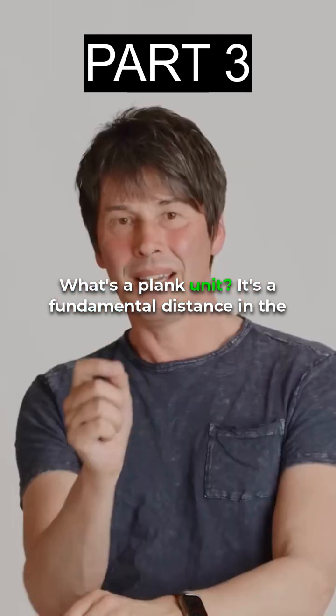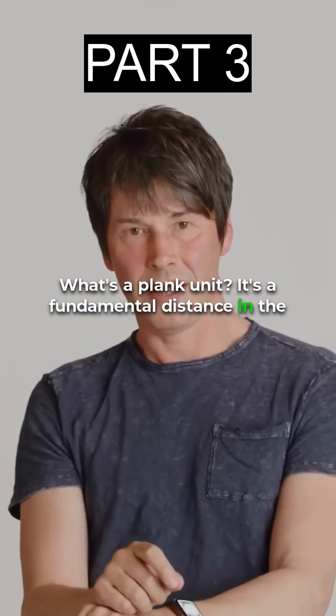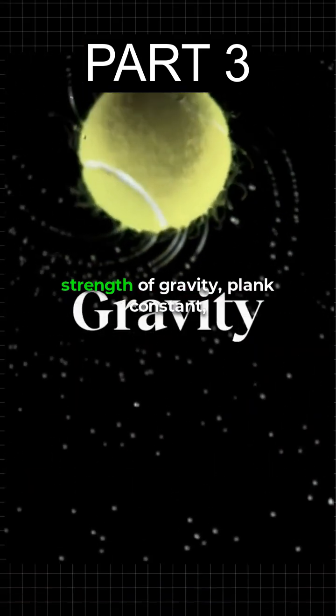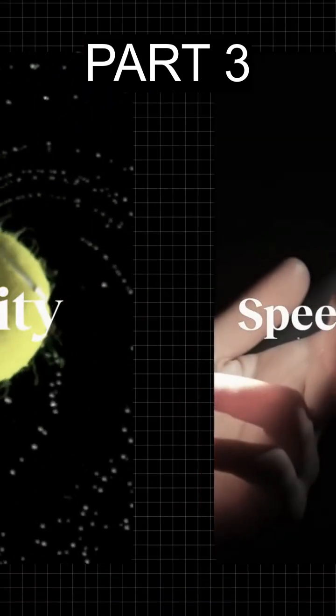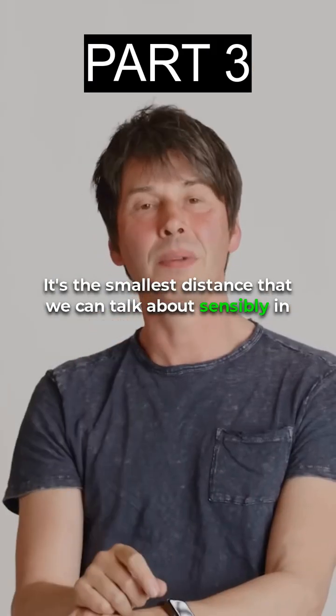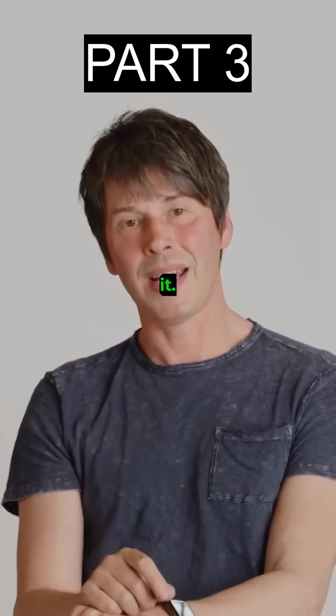What's a Planck unit? It's a fundamental distance in the universe that you can calculate by putting together things like the strength of gravity, Planck's constant, the speed of light. It's the smallest distance that we can talk about sensibly in physics as we understand it.